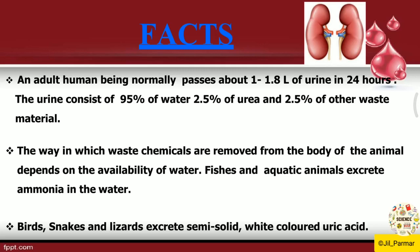The way in which waste chemicals are removed from the body of an animal depends on the availability of water — the more water, the more urination. Fishes and aquatic animals excrete ammonia in the water, because fish cannot come out of water for excretion. After that, birds, snakes, and lizards excrete semi-solid white-colored uric acid. We often see birds leaving white droppings — that is their white-colored urine secretion.